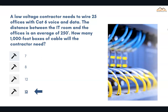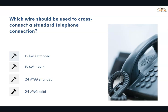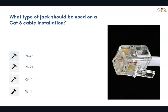The correct answer is 13. Which wire should be used to cross-connect a standard telephone connection? The correct answer is 24 AWG solid. What type of jack should be used on a CAT6 cable installation? The correct answer is RJ45.